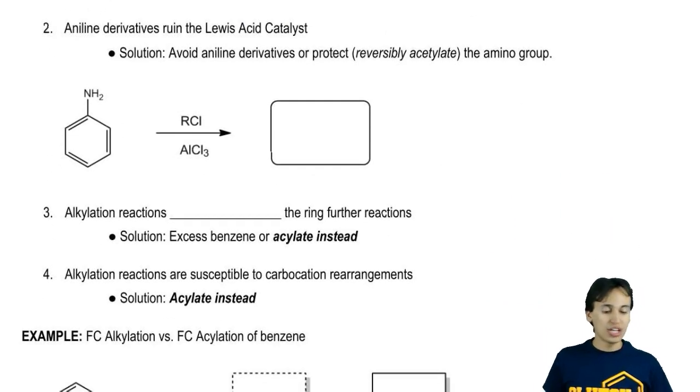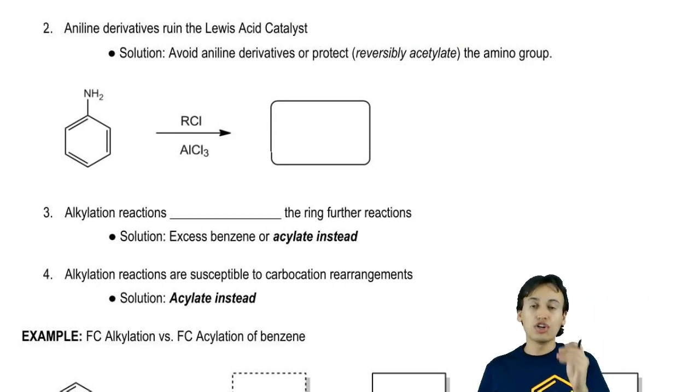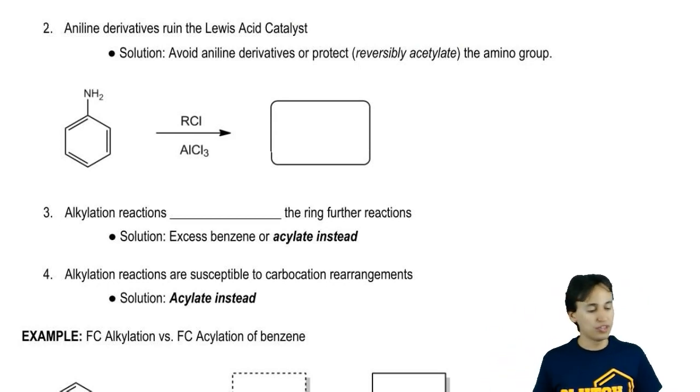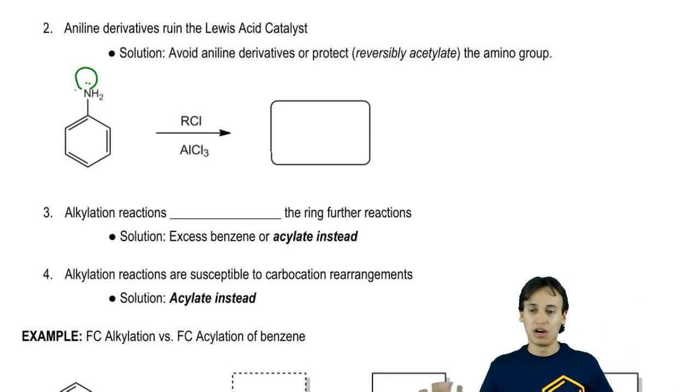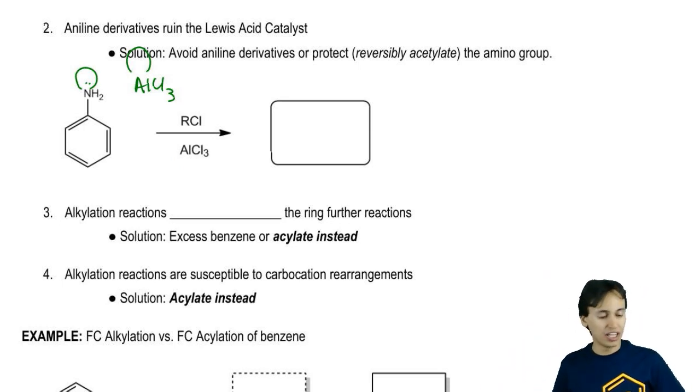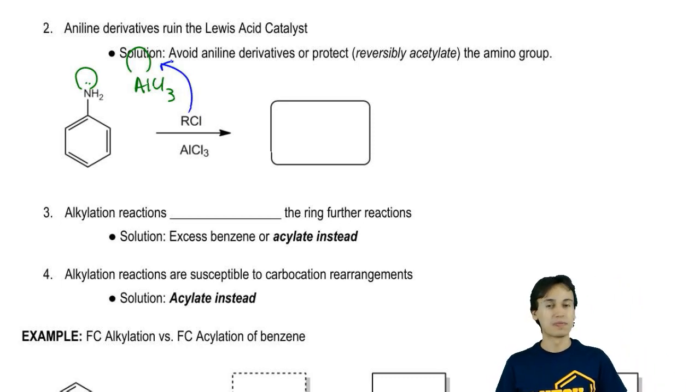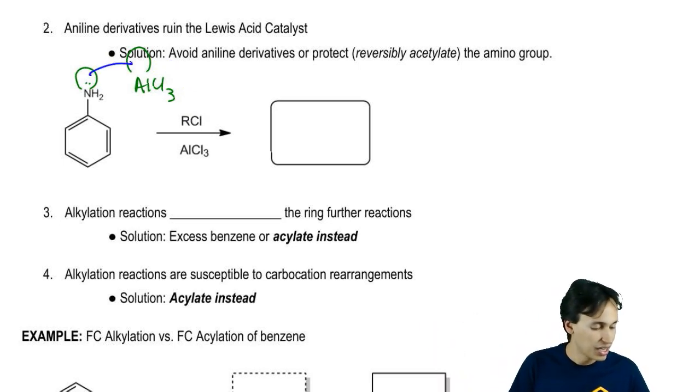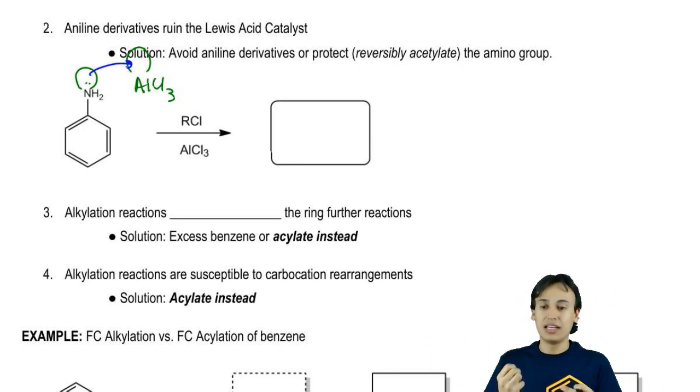The next limitation: aniline derivatives are going to ruin the Lewis acid catalyst. If you recall, this is the most basic lone pair possible on a benzene, and AlCl3 is one of the strongest acids - a strong Lewis acid. Usually we would expect that the bond between the alkyl halide would donate to the empty orbital, but that's not what happens because it's going to compete with the lone pair from the nitrogen, and the aniline is actually just going to complex with it itself.